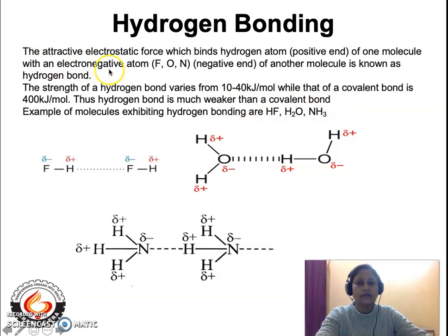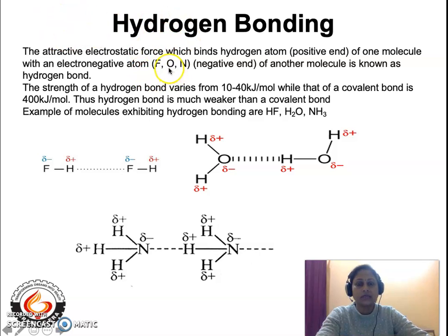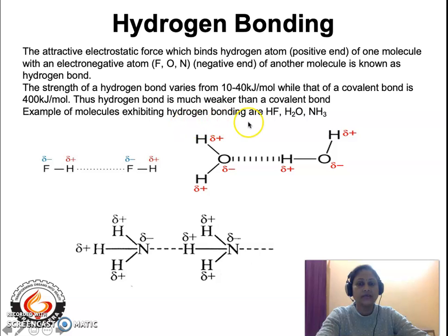What is an electronegative atom? Any atom which has the tendency to draw electrons towards itself is called electronegative, and that atom is known as an electronegative atom. Among all the elements in the periodic table, fluorine has got the highest electronegativity, followed by oxygen and then followed by nitrogen. These three elements are usually involved in hydrogen bonding.